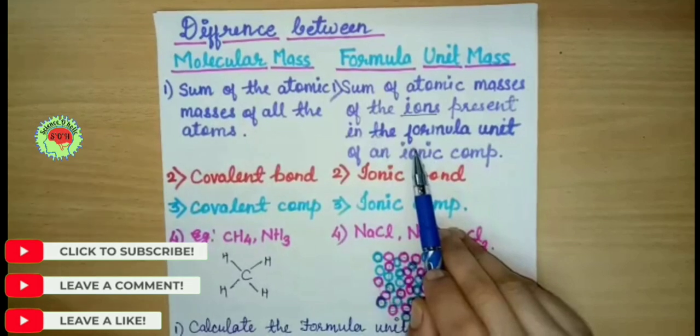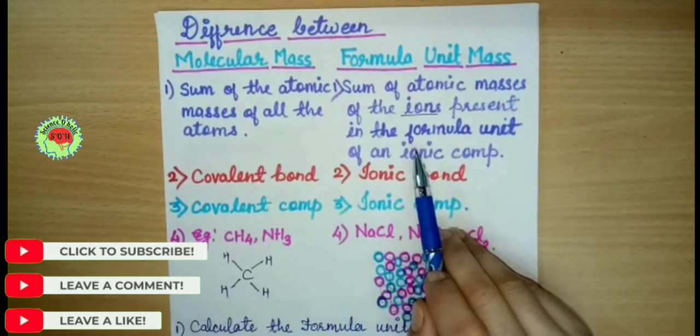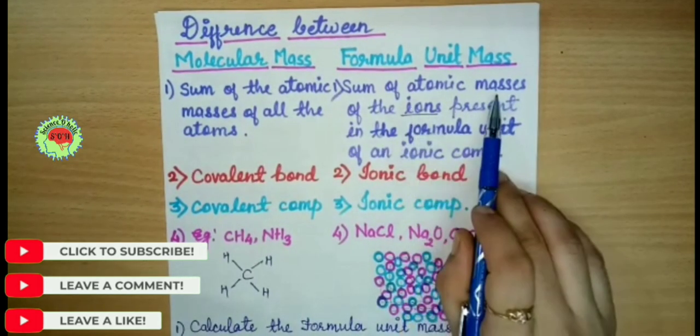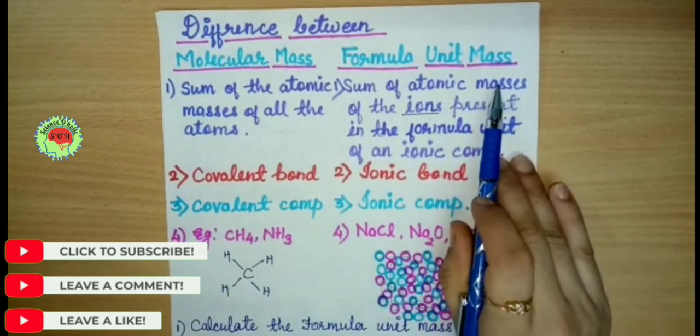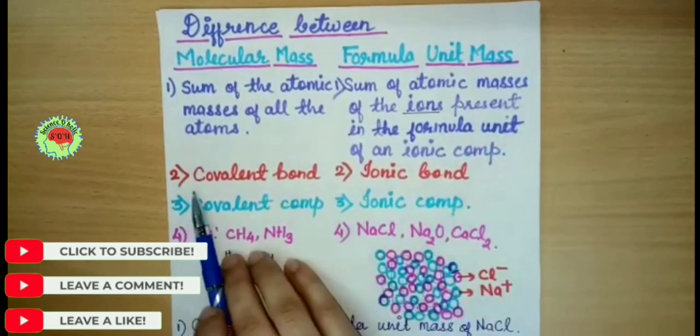Any ionic compound has cations and anions. We add up the atomic masses of those cations and anions, and the answer we get is the formula unit mass of any ionic compound. So this is the first difference.